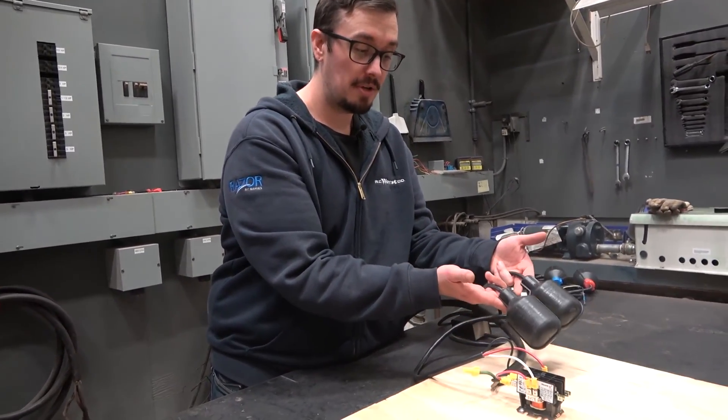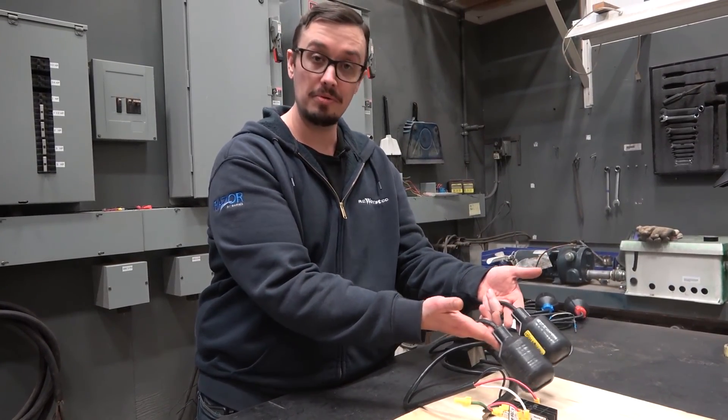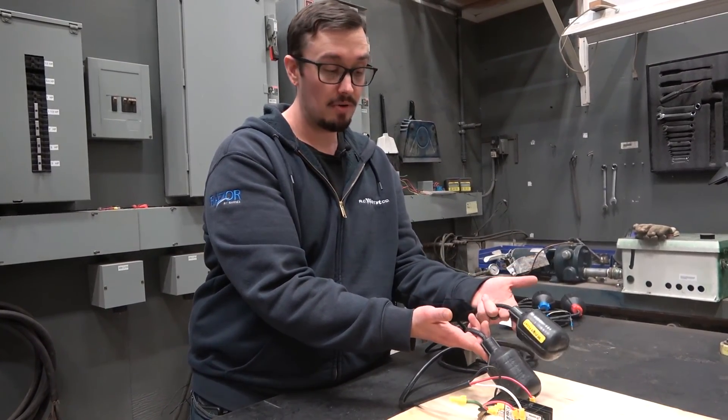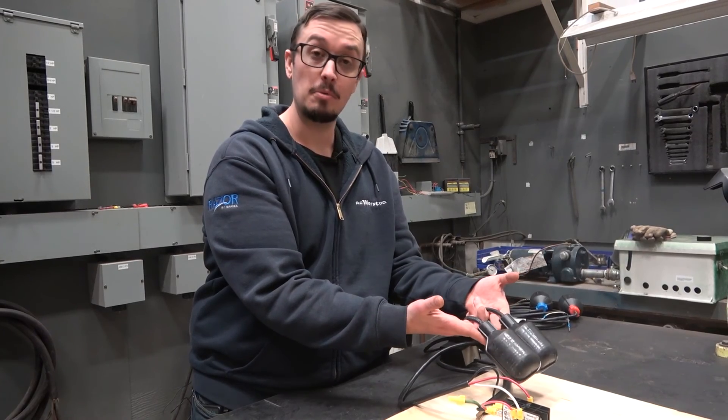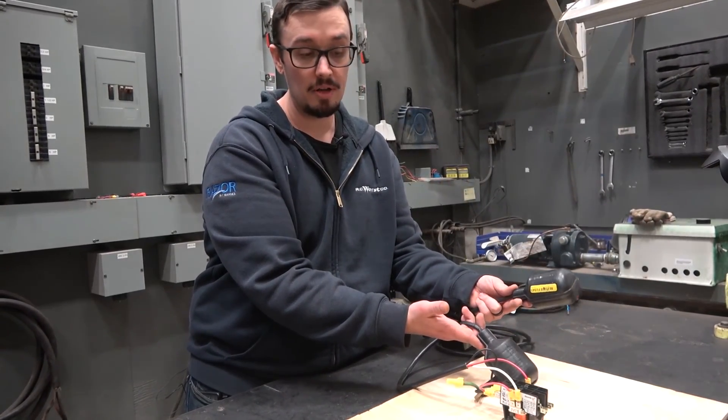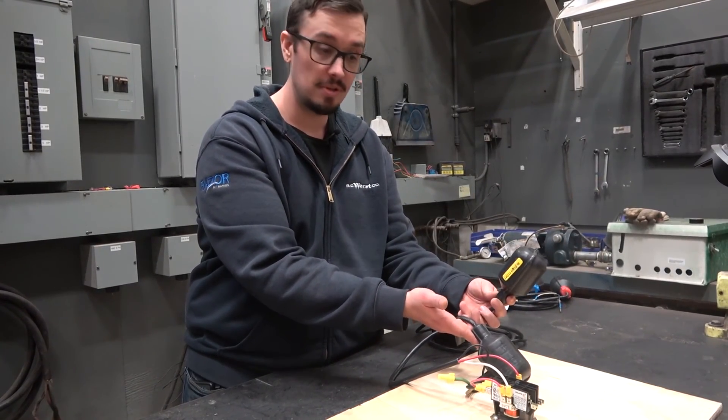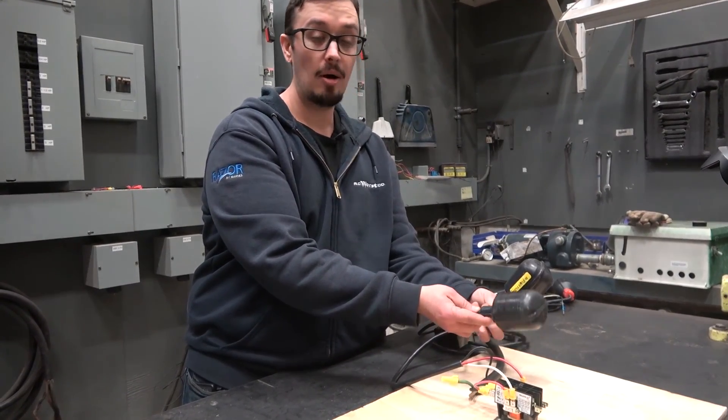We've got our two float switches here - this one being the bottom float, this one being the upper float. In a double float configuration, in a pump down application, when the water level goes up our contactor remains in the same open position, and then finally our upper float goes up, pulling in that contactor.